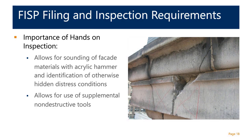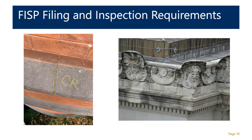The importance of up-close inspections is that they allow the QEWI to sound, touch, and assess different types of building materials, and possibly identify hidden distress conditions not otherwise discoverable through visual inspection from the street. Close-up inspections also allow for the use of supplemental non-destructive tools such as metal detectors, ground-penetrating radar, or boroscope cameras. For example, a crack on the top side of a water table — viewed looking downwards — would not otherwise be seen from the street and could be classified as safe with a repair or maintenance program, or possibly unsafe.